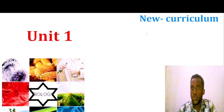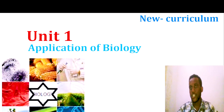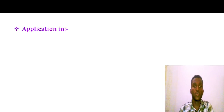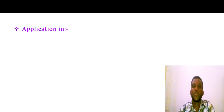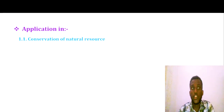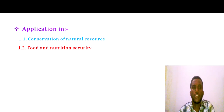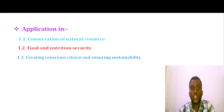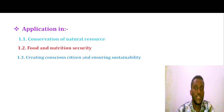As you can see in biology, there are two curriculums. We have Unit 1, Applications of Biology. The main topics include: applications of biology and conservation of natural resources, applications of biology and food and nutritional security, and creating conscious citizens and ensuring sustainable development or sustainability.